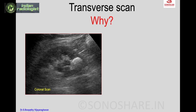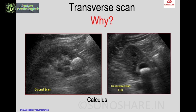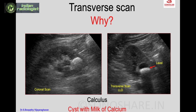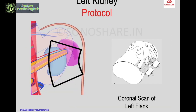Certain diagnoses are section-specific and will be obvious in a transverse scan. Here on a coronal scan you see what appears to be a calculus in the lower pole, but in the left lateral decubitus position you see that there is actually a cyst in the lower pole with a fluid-fluid level, indicating milk of calcium within a cyst — an entirely different diagnosis that does not need intervention, unlike a calculus which requires removal.